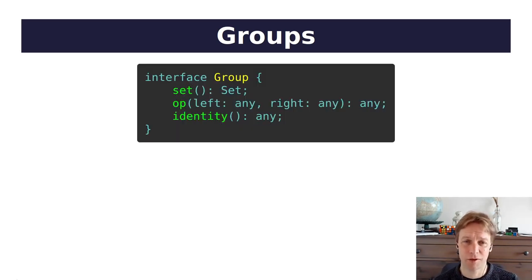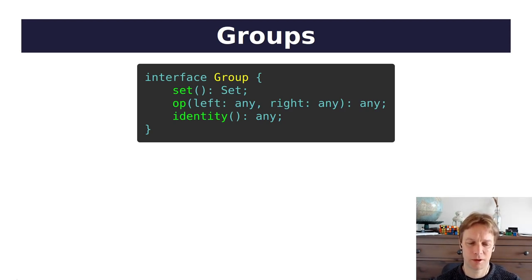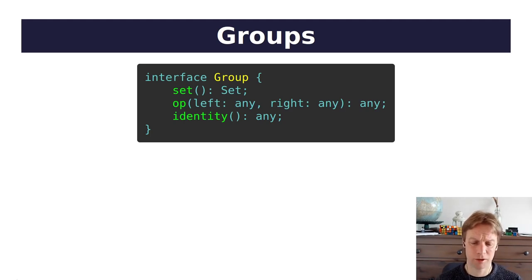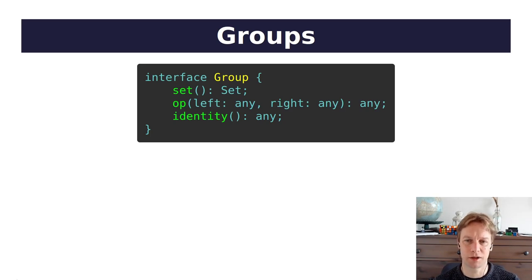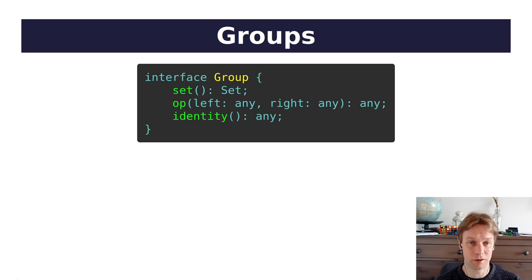So let's see some code — that was far too long without any code. Here is an interface that represents, to some extent, what a group is. A group consists of a set — that might be a set of some numbers, or a set of some symbols or something else. And then the op part is that there's an operation which allows you to combine together two of those things and get a third one. You take a left and a right and you return something. The example is TypeScript, but hopefully that won't put you off. Basically, you can take two things which are in the set and the op will return another thing which is also in the set. And then the third part is an identity — an element of the set that doesn't really do anything to the stuff you combine it with.